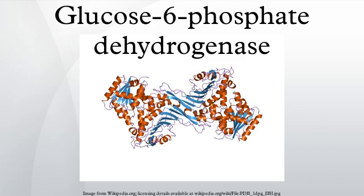G6-PD is one of a number of glycolytic enzymes activated by the transcription factor hypoxia-inducible factor 1. G6-PD is remarkable for its genetic diversity. Many variants of G6-PD, mostly produced from missense mutations, have been described with wide-ranging levels of enzyme activity and associated clinical symptoms. Two transcript variants encoding different isoforms have been found for this gene.